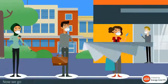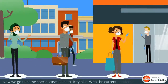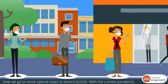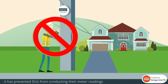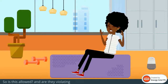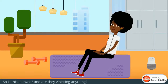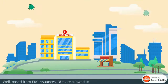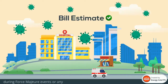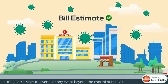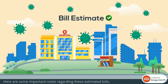Now we go to some special cases in electricity bills. With the current pandemic, it has prevented DUs from conducting their meter readings. As a result, they have resorted to estimations. So is this allowed, and are they violating anything? Well, based on ERC issuances, DUs are allowed to estimate your bills during force majeure events, or any event beyond the control of the DU. Here are some important notes regarding these estimated bills.